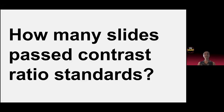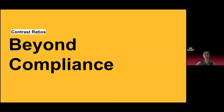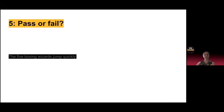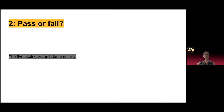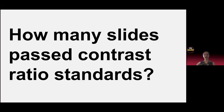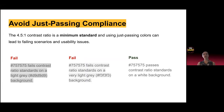Surprisingly, these all passed. The reason I wanted to go over this was to kind of talk about going beyond compliance. Even though most people thought that they failed, these are actually all passing — they all have a 4.5 to 1 contrast ratio standard. So it's important to note that even though something might pass contrast ratios, it doesn't necessarily mean that it's easy to read. So as you're designing, as you're developing, definitely use that 4.5 as a minimum, but also just think about how easy or difficult this is to read.